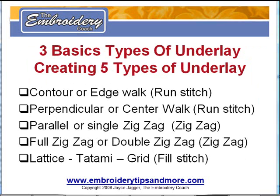What are the different types of underlay? There are five basic types of underlay stitches. These can be applied by hand if you are digitizing your own design, or they can be applied automatically if you have this capability within your software. Sometimes you cannot get the same effect using the auto functions in the software, so you need to know how to apply the different types by hand to get the exact effect that you are looking for. The basic types include contour and edge walk.